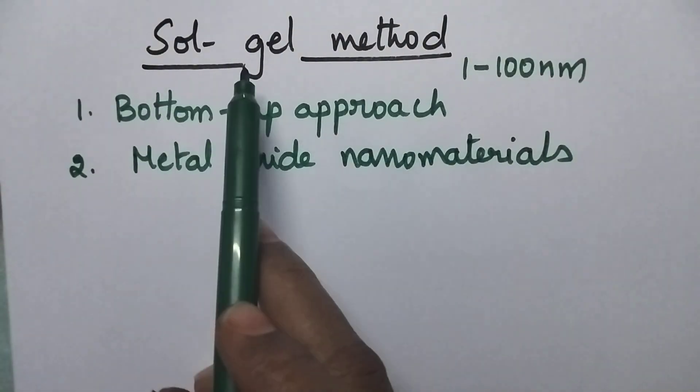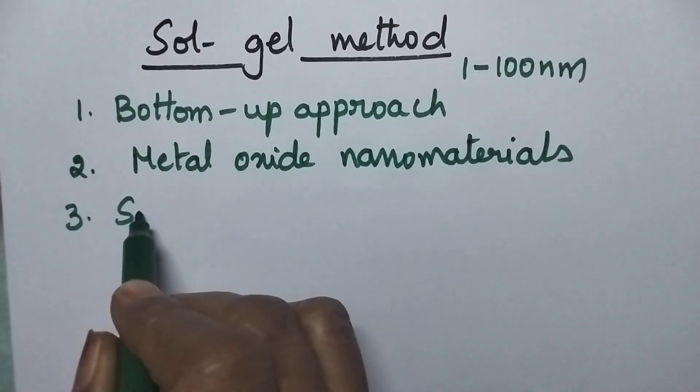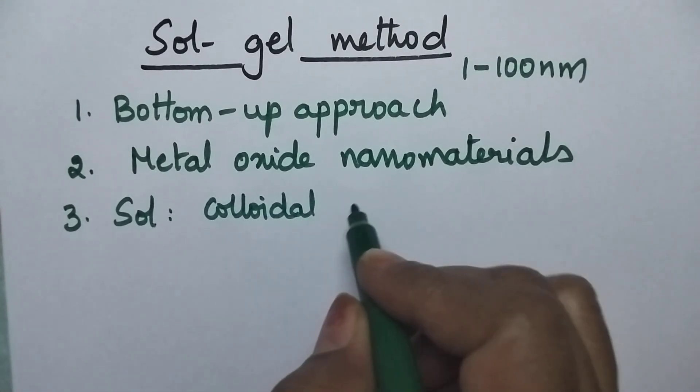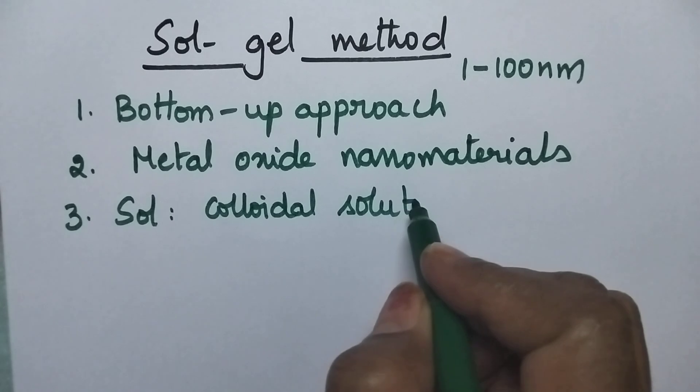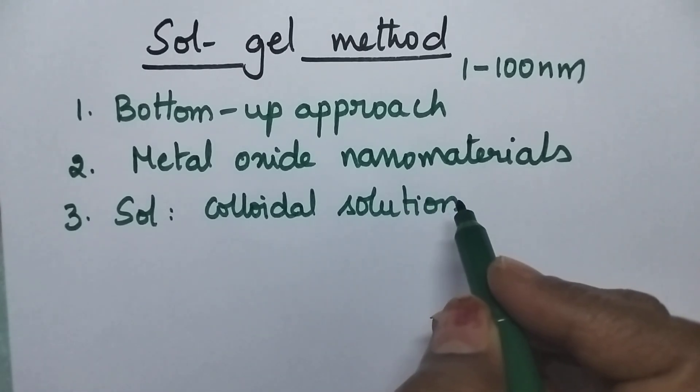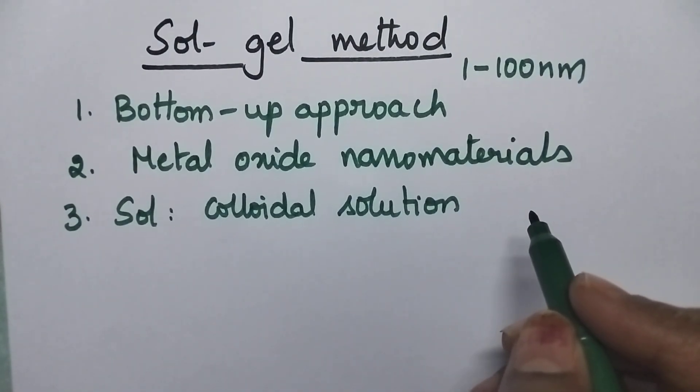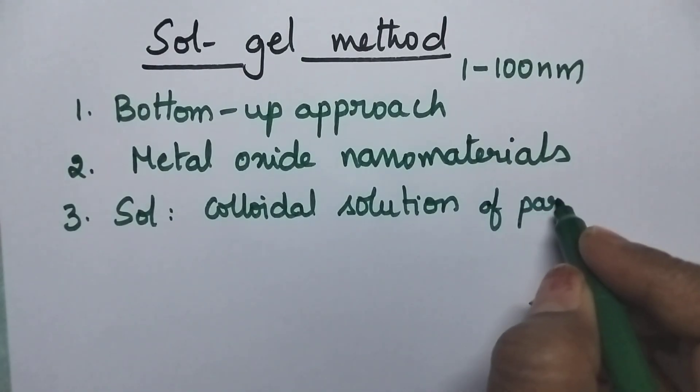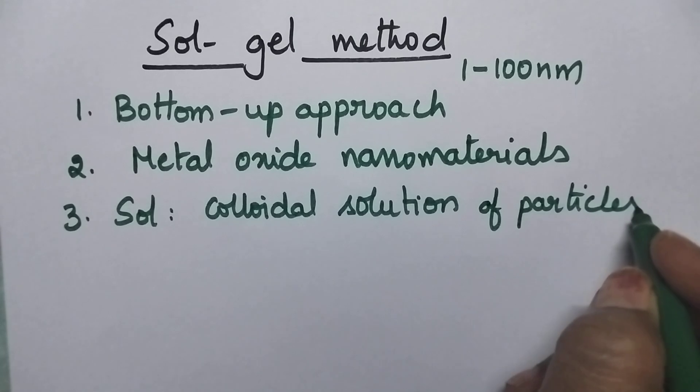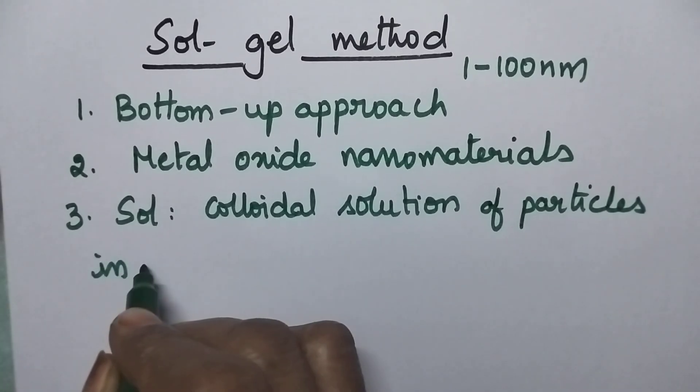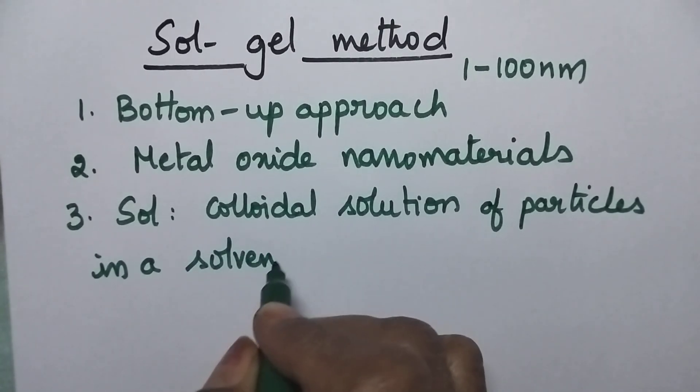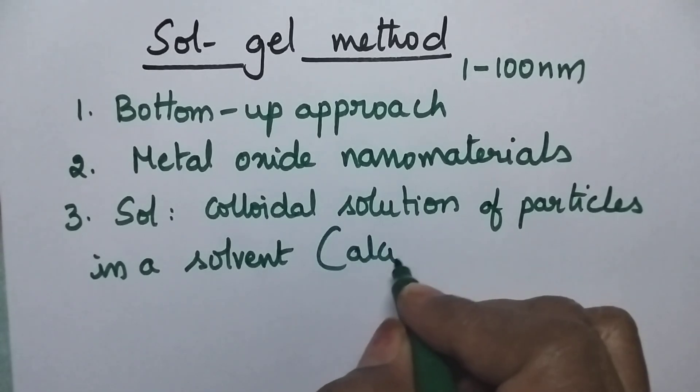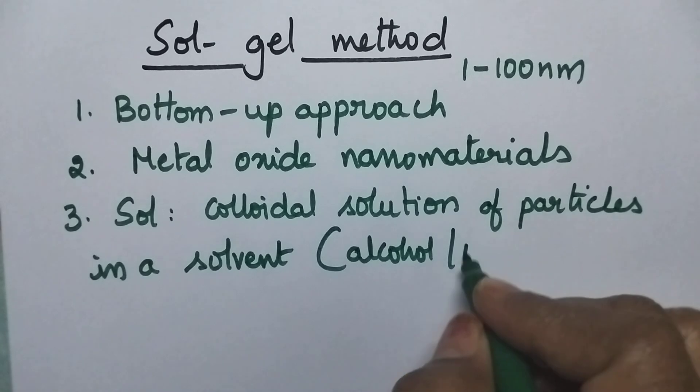So in this Sol-Gel method one should know what is meant by a Sol. Sol means it is a colloidal solution or suspension of particles in a solvent. Most probably employed solvent may be alcohol or water.